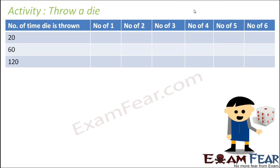Let us take another activity: throw a die. A die is a cubical figure which has 1, 2, 3, 4, 5, 6 on its 6 sides. We have to find the probability of getting 1, 2, 3, 4, 5, and 6. So let us do an experiment and throw this die 20 times, recording the number of 1s, 2s, 3s, 4s, 5s, and 6s we get.